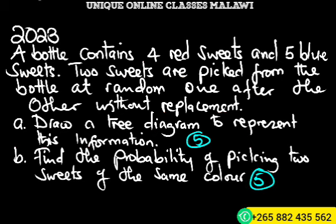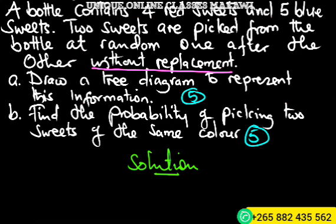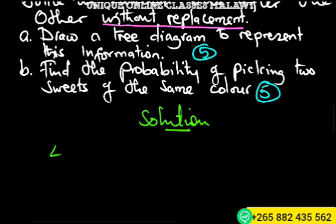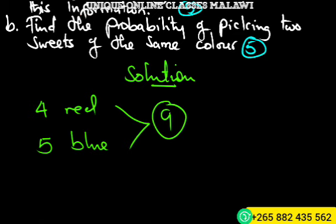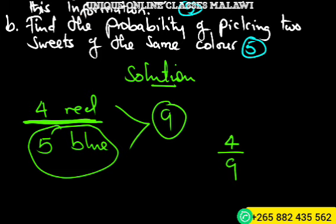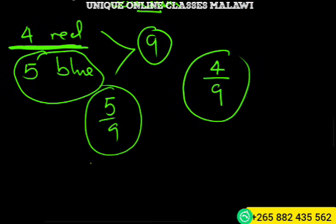Let's have our solution here. Since we have four red and five blue, it means the total is nine. Total number of sweets is nine. So for the first picking, the probability of picking a red sweet is 4 over 9, and the probability of picking a blue sweet is 5 over 9.